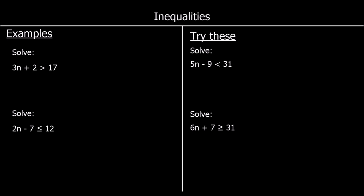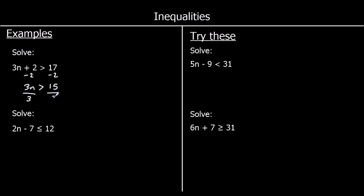Let's look at these examples. The first one: solve 3n + 2 > 17. To solve, I want to get n by itself. I'll get rid of the plus 2 first by taking 2 away from both sides, leaving 3n > 15. Then I divide both sides by 3, giving n > 5. That's the answer.